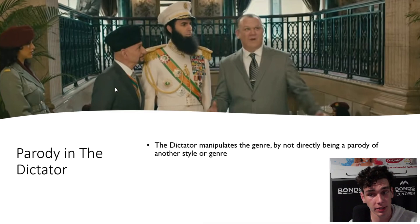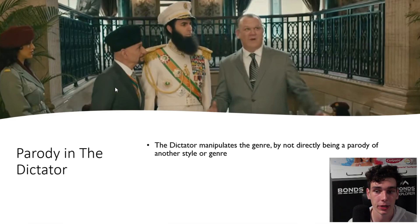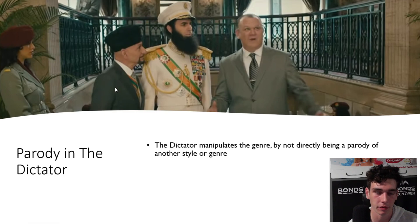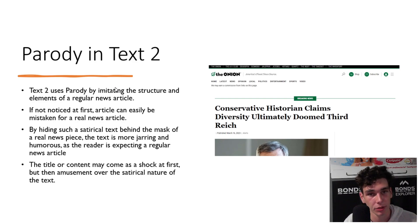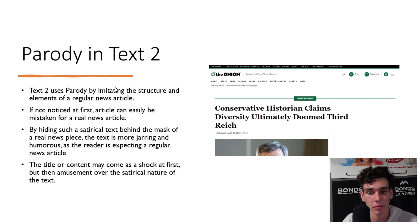The Dictator doesn't directly parody another text. It's still a satire, however, as it presents its message and creates humour without being a parody. This is manipulating the genre, as most pieces of satire are parodies in some shape or another of other texts. Text 2 does use parody, as it copies the structure and elements of a regular news article. By hiding satire behind the mask of a serious text, it can become jarring and humorous. The text is supposed to mock the reliability of news sources, in addition to the content it covers.